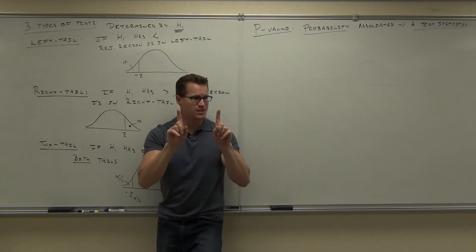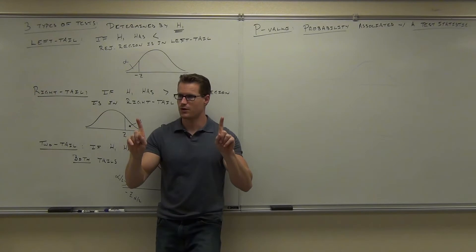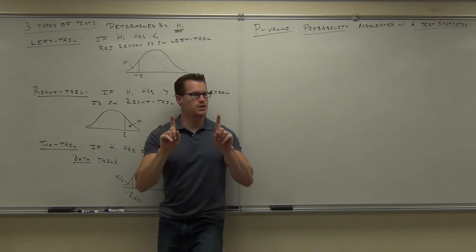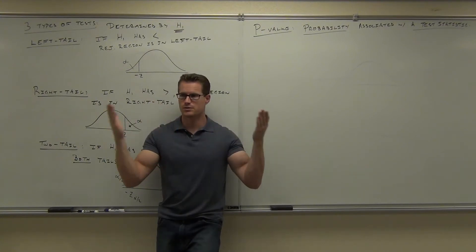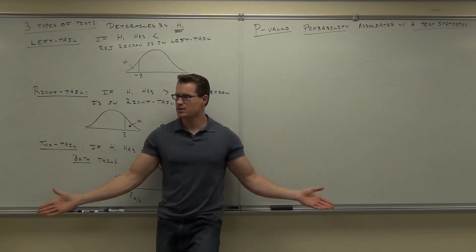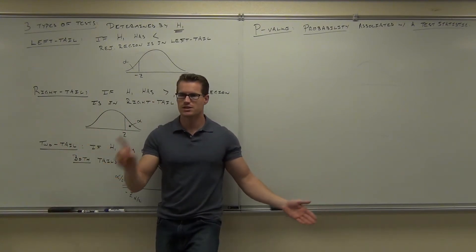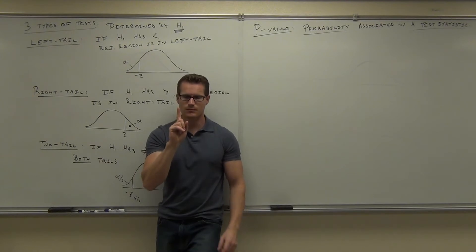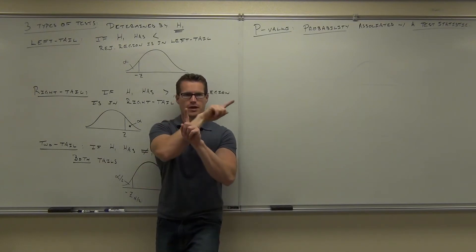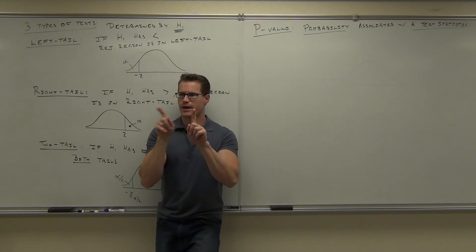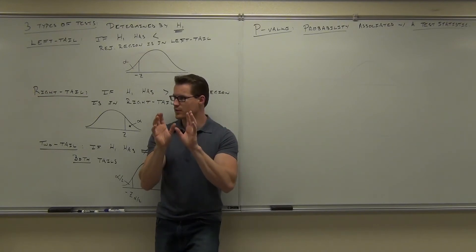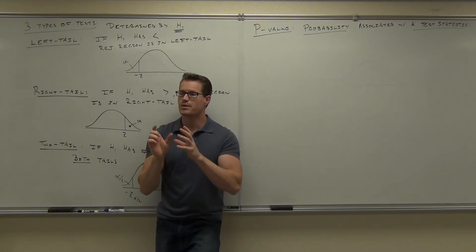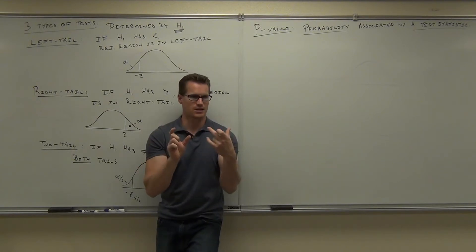Then you look at your test statistic and see where it falls. The P-value method does something a little bit backwards. It says you're not going to worry about critical values at all. All you have is your test statistic, and you're going to put that on your chart and find out the area for that particular value.